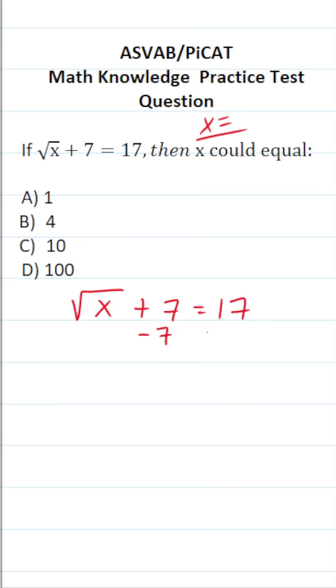The first thing I'm going to do is subtract 7 from both sides. This gives us the square root of x equals 17 minus 7, which is 10.